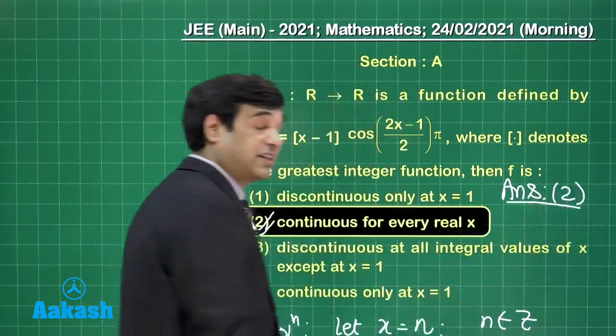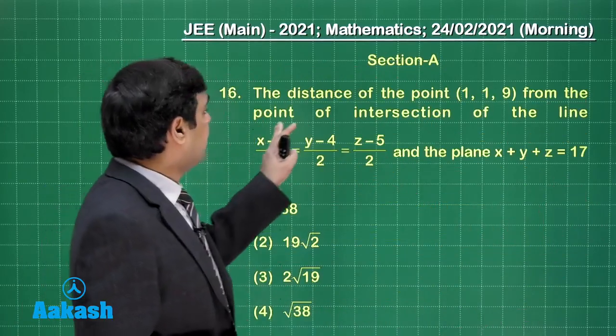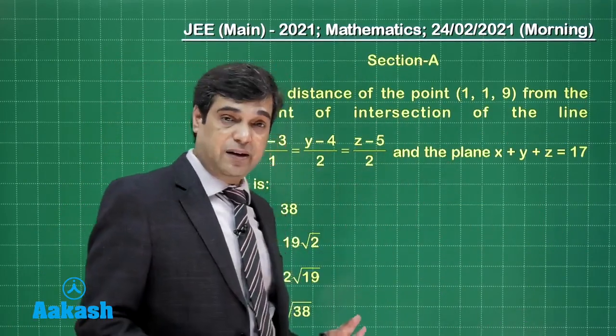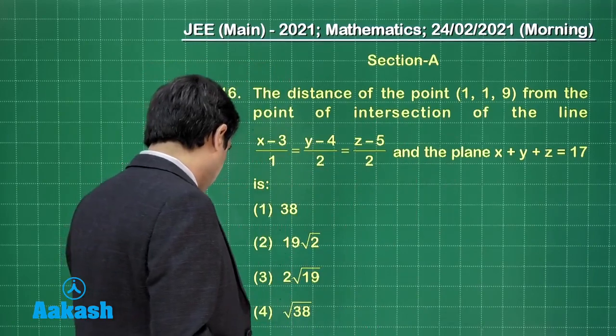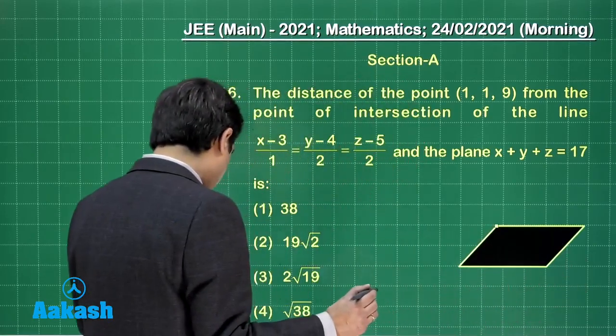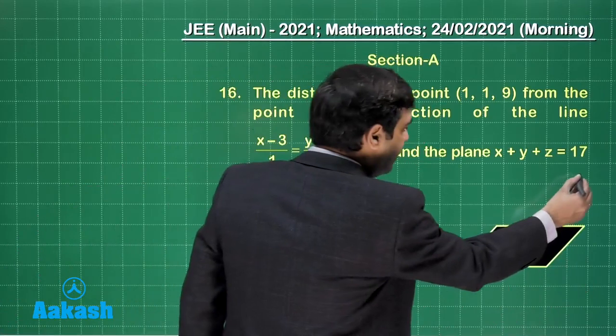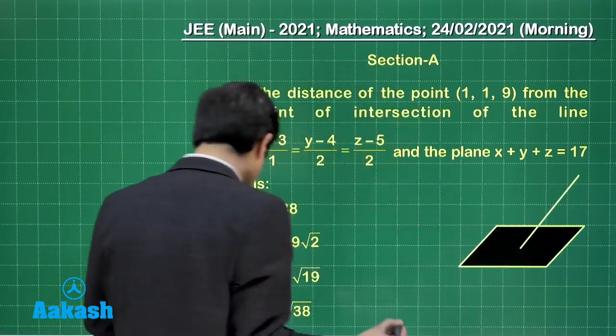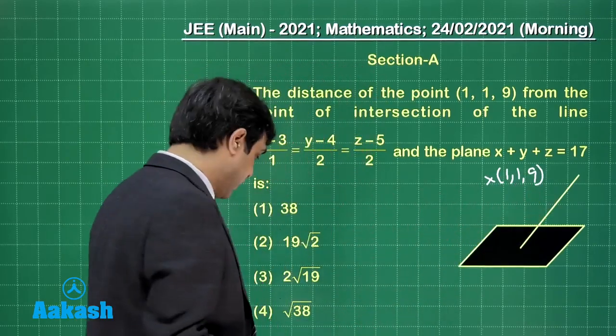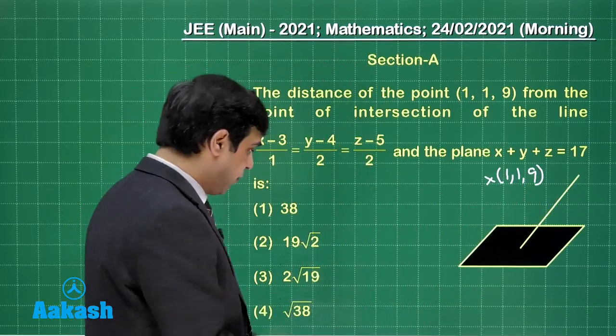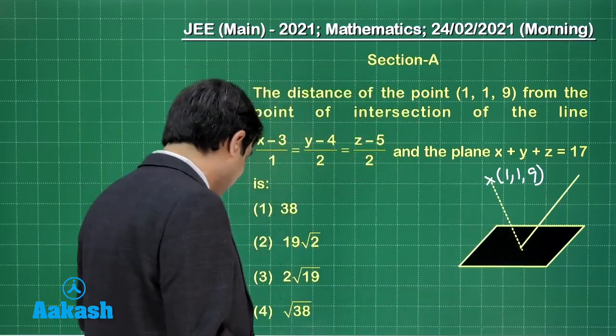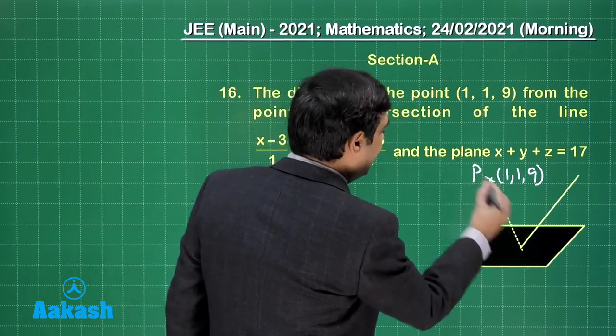Let us move on to the next question, that is question number 16. The distance of the point (1,1,9) from the point of intersection of the given line and given plane. So when you talk about this question, you can see suppose we have a plane like this, correct. Now question is talking about there is a line which is intersecting at some point, suppose here. Now one point is also given to us, say here it is (1,1,9), correct. Question is saying find the distance of this point of intersection with the given point.